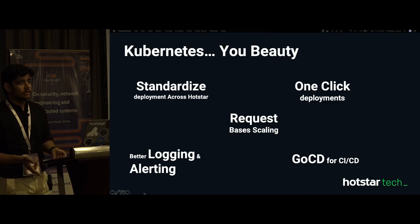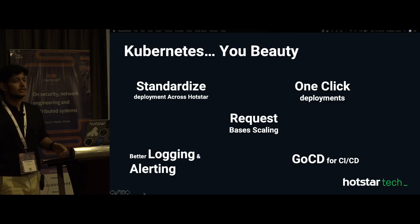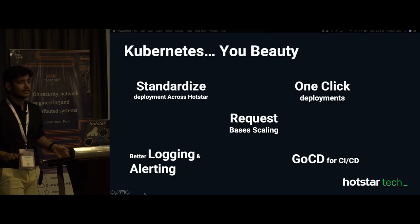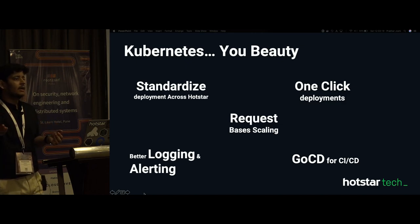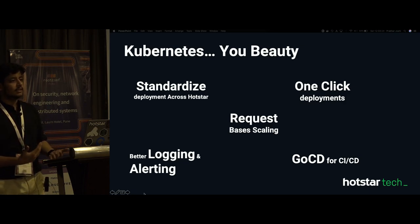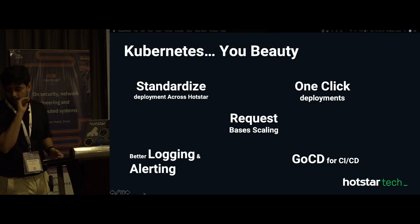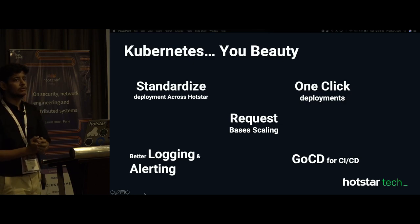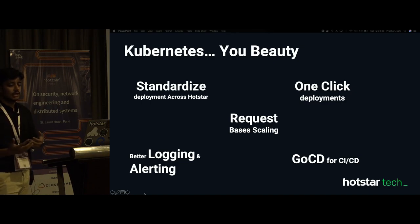Logging and alerting have been improved. Earlier, some applications logged debug logs, others only error logs — it was inconsistent. Now it's standardized: every application declares what type of logging it needs, and at a single place I can see what's happening across the organization. We use Go-CD for CI/CD, deployed on the Kubernetes cluster itself.